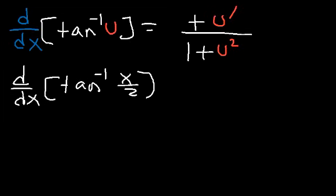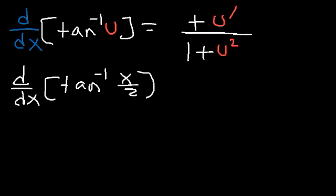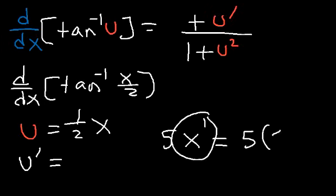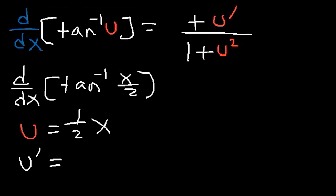The first thing you need to find is what u is equal to. Here, u equals x over 2, which we can write as one-half x. For u prime, recall that the derivative of 5x is 5, the derivative of 8x is 8, and the derivative of one-half x is one-half. Using the power rule, you bring down the exponent and the constant remains in front.